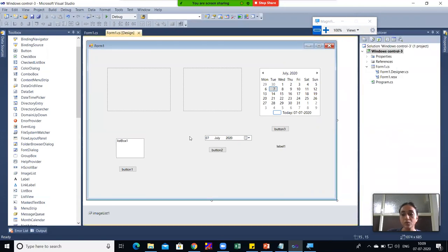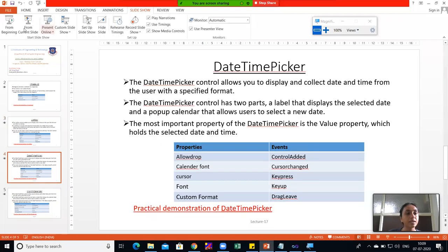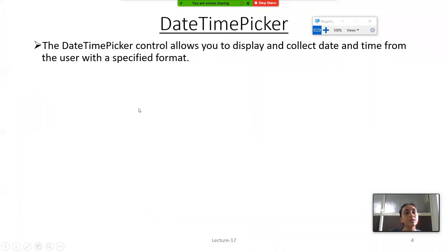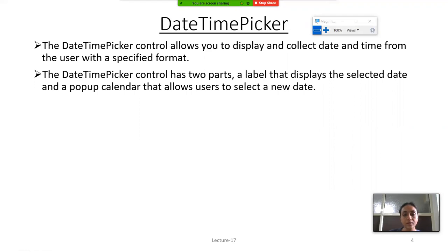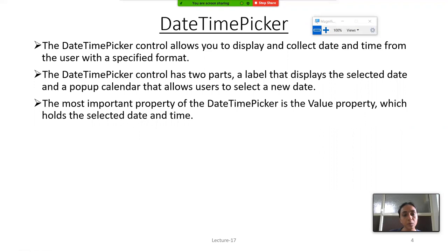Now the next control is Date and Time Picker. The Date and Time Picker control allows you to display and collect a date and time from the user with a specified format. It has two parts: a label that displays the selected date, and a pop-up calendar that allows the user to select a new date. The most important property is the Value property, which holds the selected date and time.